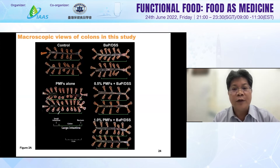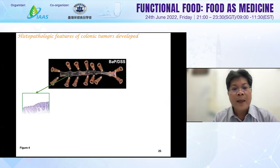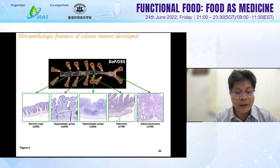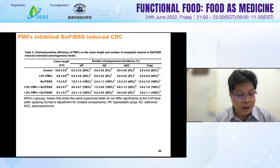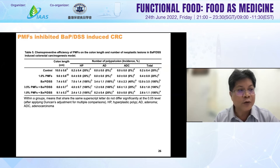From the photographs, we can see tumor formation induced by BAP and DSS, and PMF in a dose-dependent manner inhibited colorectal tumor formation. We checked the types of lesions including hyperplasia, polyp adenoma, and adenocarcinoma, identified by hematoxylin and eosin staining under a microscope. The tumor count shows PMF significantly reduced the number of total polyps from 5.8 and 6 down to 2.6 at 0.5% and 1% PMF, respectively, compared with 12 in the BAP+DSS-induced group.